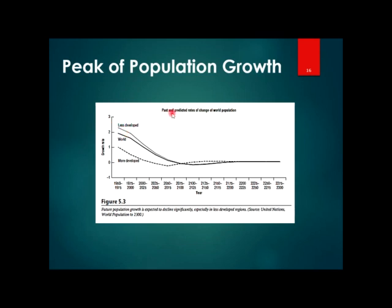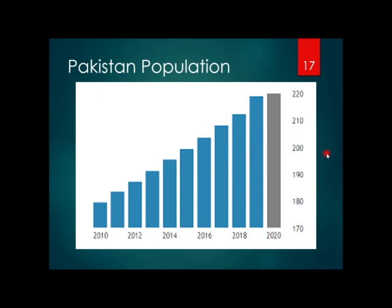The graph shows that in the past, less developed countries were growing rapidly relative to average world population, while more developed countries had lower population growth. Overall, world population growth is declining, and after 2020, this growth is becoming more stable. For Pakistan specifically, the total population to date is 220 million, with figures on the y-axis in millions and time in years on the x-axis.